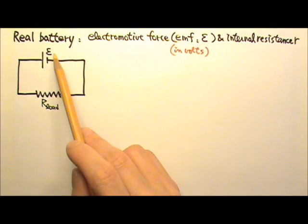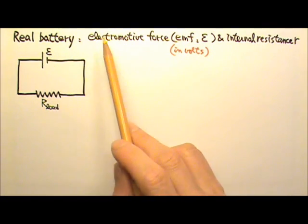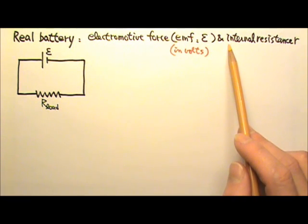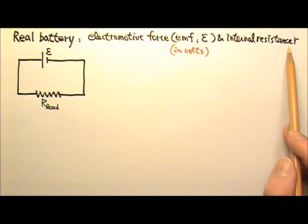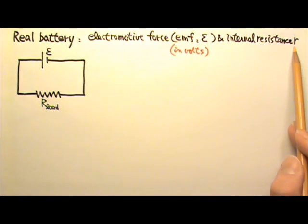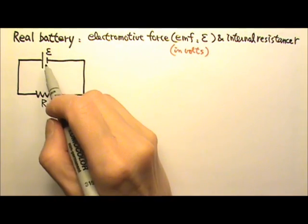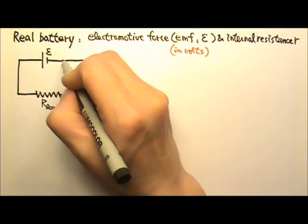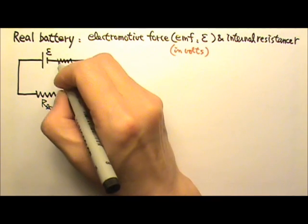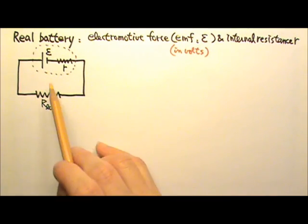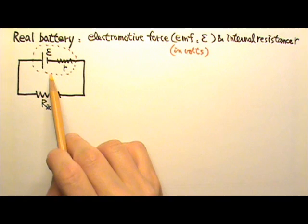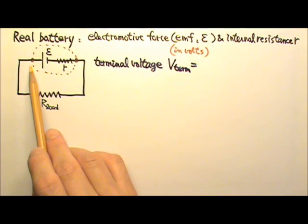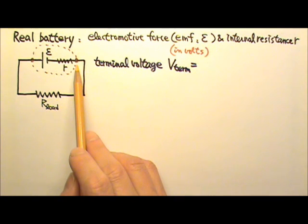So an ideal battery has an EMF. But a real battery not only has an EMF, it also has some resistance, which we call internal resistance. We usually use r for internal resistance. So a real battery is basically an ideal battery with an EMF plus an internal resistance r. This whole thing is the real battery. This point is the positive terminal of the real battery, and that point is the negative terminal.